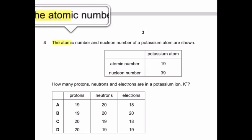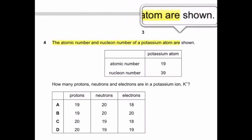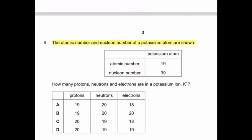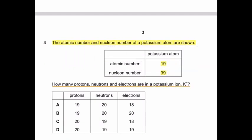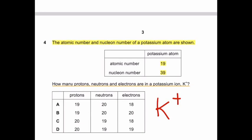Question number 4: The atomic number and nucleon number of a potassium atom are shown. Atomic number, number of protons are 19. Nucleon number, the total number of protons and neutrons are 39. How many protons, neutrons and electrons are in potassium ion, K positive? Because it is having plus charge it is showing that it has lost one electron. It means from the total number of electrons you have to minus one electron.